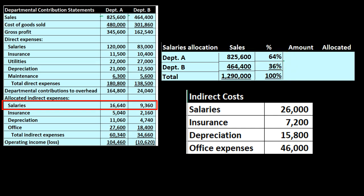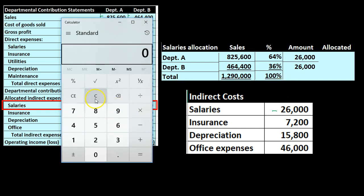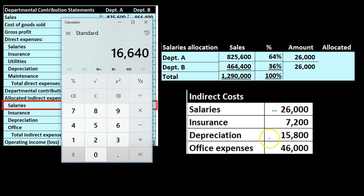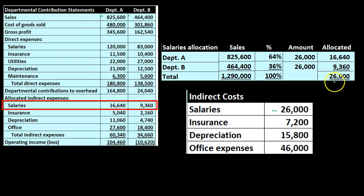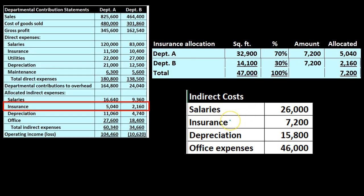Now we have percentages to break out the salaries: 64% and 36%. The total indirect salary is $26,000. We multiply $26,000 times 0.64 to get $16,640 for Department A, and times 0.36 to get $9,360 for Department B, totaling $26,000. Remember, sales does not necessarily have a direct relationship to salaries — we simply think sales is a good activity base to generate percentages that allocate salaries more appropriately than just dividing them evenly by two.